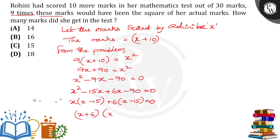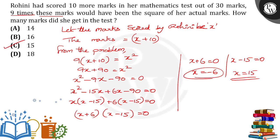So (x+6)(x-15) = 0, which gives us x+6=0 or x-15=0. Since negative numbers are not considered for marks, x = 15 is the right answer. Thank you.